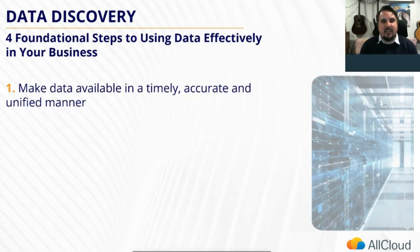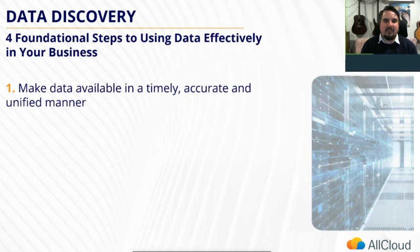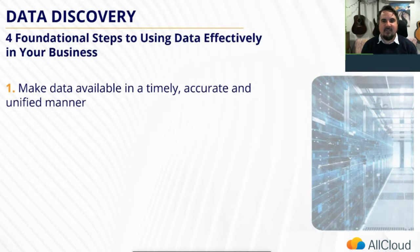Number one: make the data available in a timely, accurate, and unified manner. Data can come from many places continuously and is rarely the same across different sources. Additionally, the raw data itself doesn't provide much value on its own, and the volume, velocity, volatility, and variety of the incoming data can make it a challenge to process.